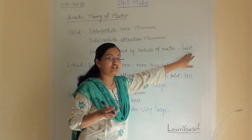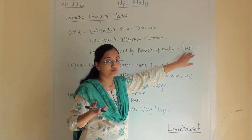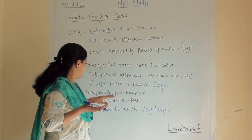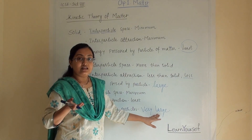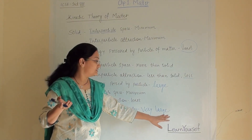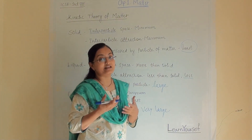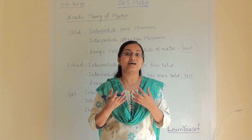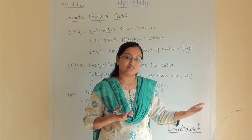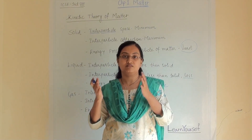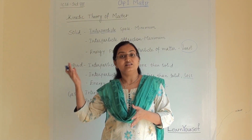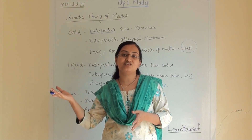To summarize: in solids the kinetic energy of particles is least because they cannot move. In liquids the kinetic energy possessed by the particles is large. In gases the particles can move freely and randomly, so the kinetic energy possessed by gaseous particles is very large. Kinetic energy is the energy possessed by molecules — molecules that move least have least energy, those that move freely have large energy, and those in gaseous state moving randomly possess the largest amount of kinetic energy.